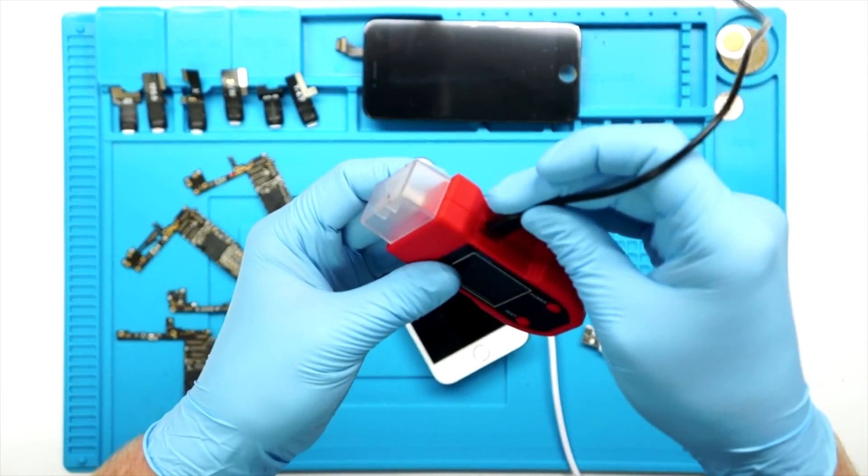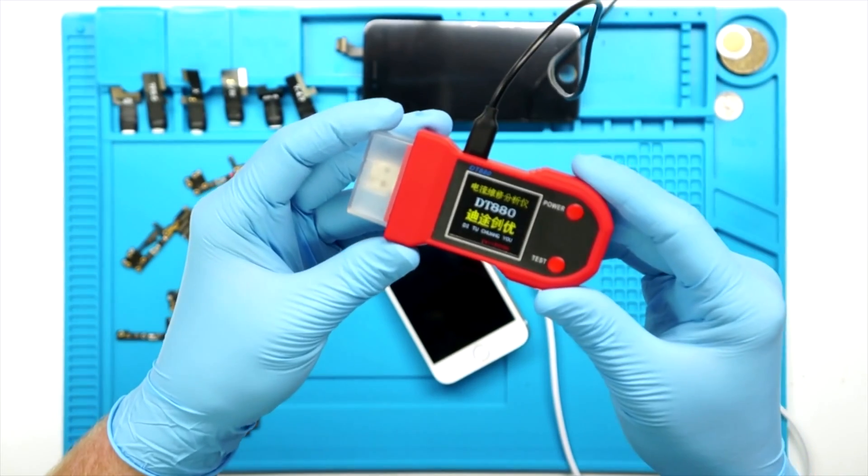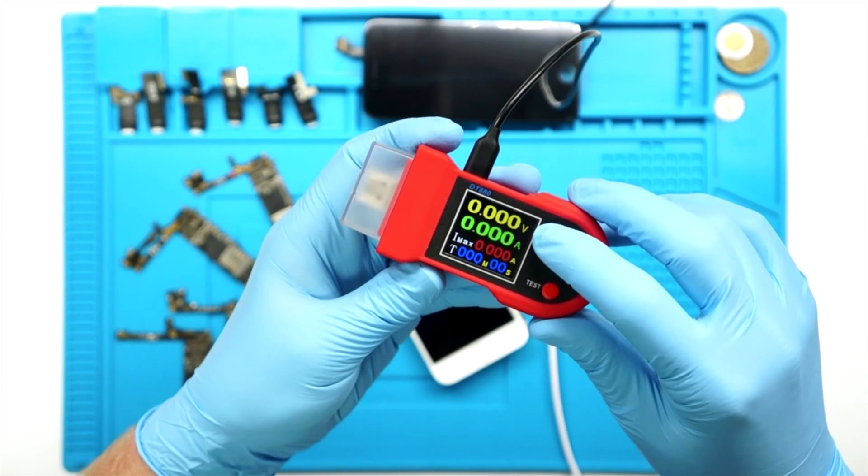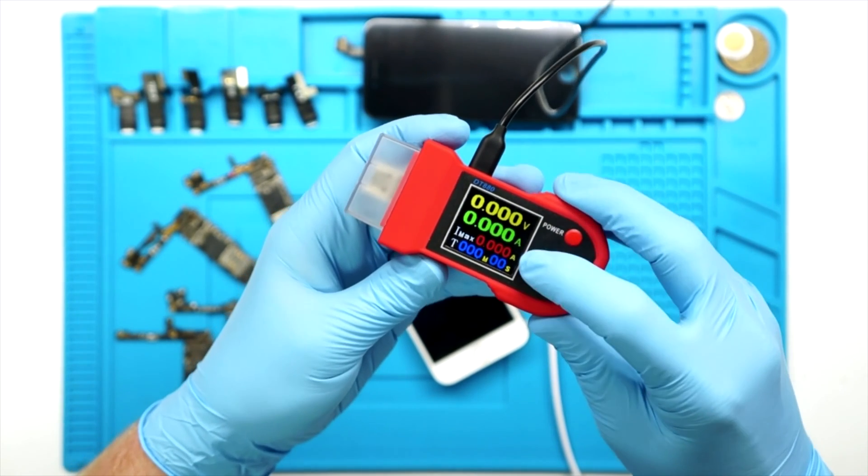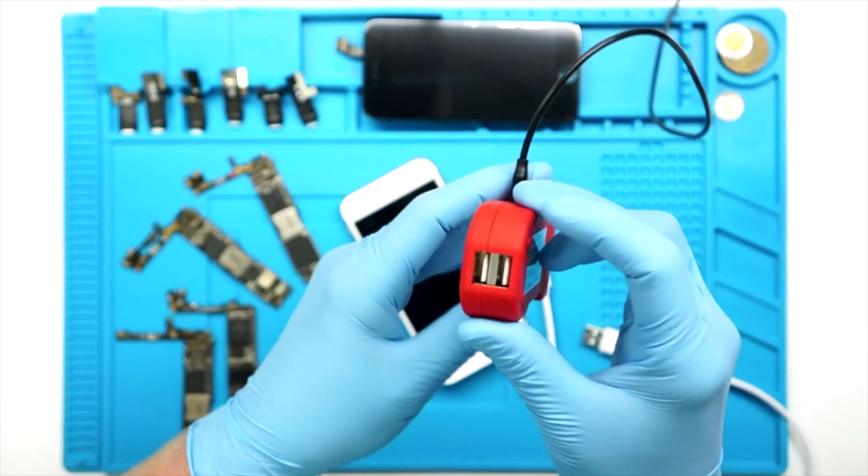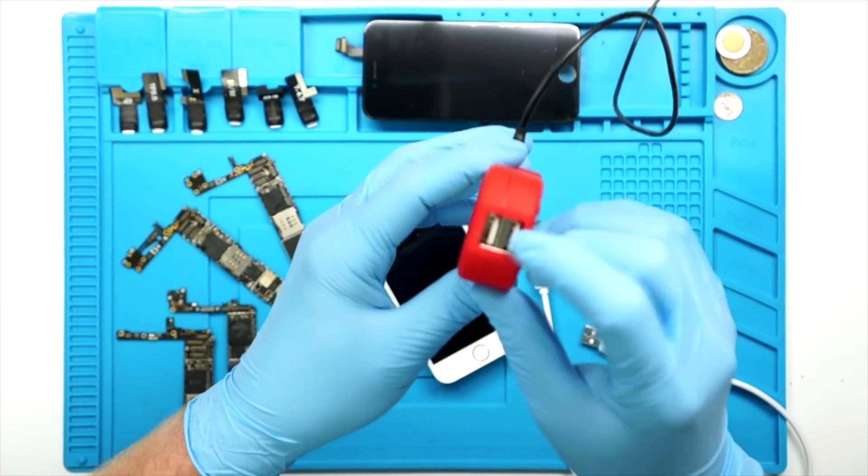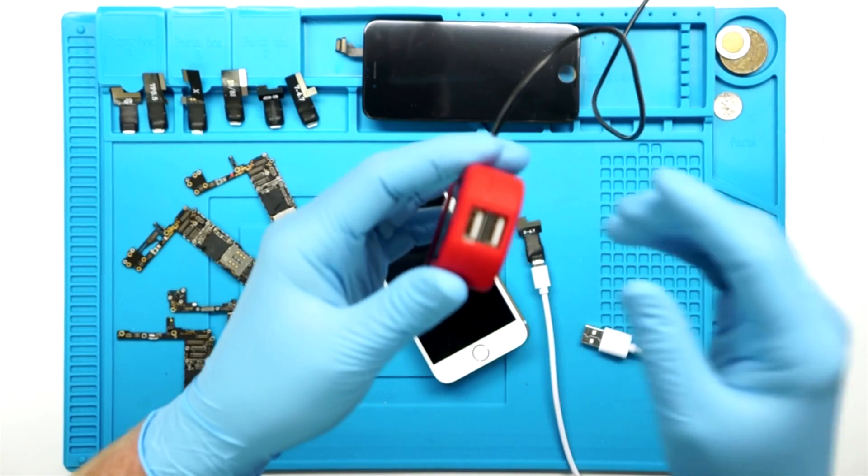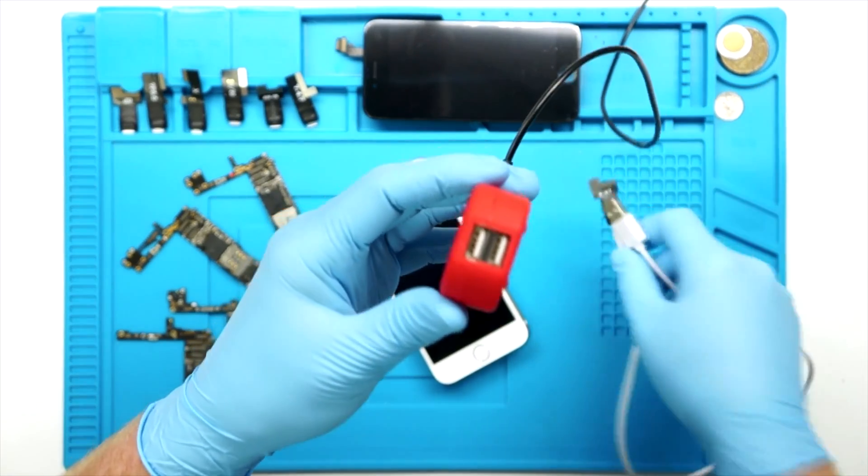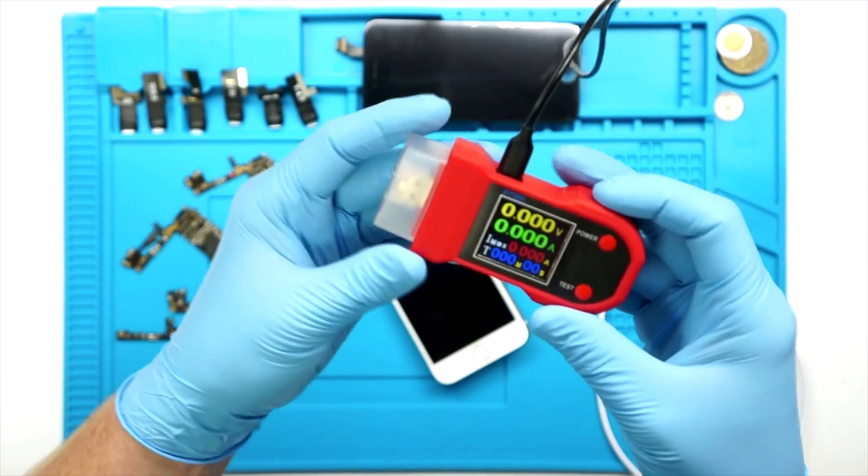So when you plug it in, it'll power up and display on the screen your voltages, your amperage, your max amperage, and also the minutes and seconds for how long it's actually been running the phone. On the right side over here, you do have some USB ports that you can plug in the provided micro USB cables and that is how you're going to power the motherboard itself.